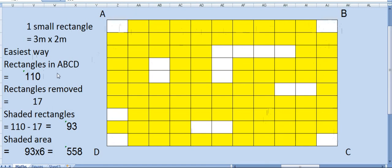Now next how many rectangles are removed? Now this is easier to count which have been removed. If you count them they are 17. So what are the shaded rectangles remaining now? 110 minus 17 is 93.